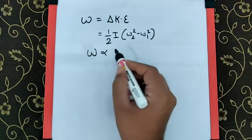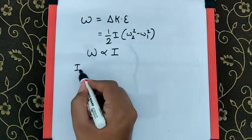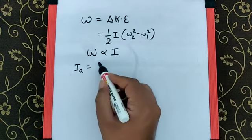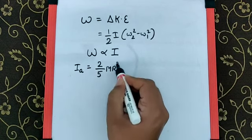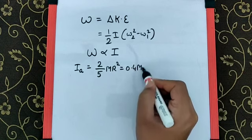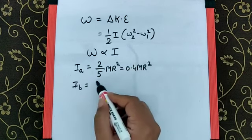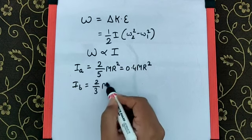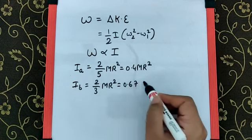work done is directly proportional to I. For the solid sphere about the diameter, the moment of inertia is 2/5 MR² = 0.4 MR². For the hollow sphere, it is 2/3 MR² = 0.67 MR².